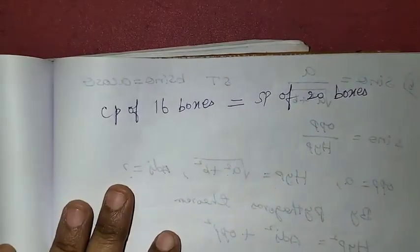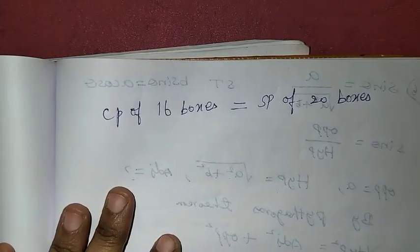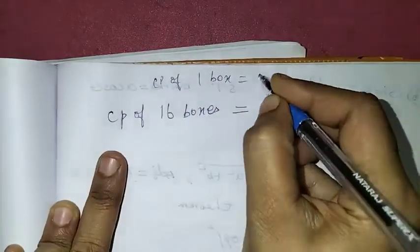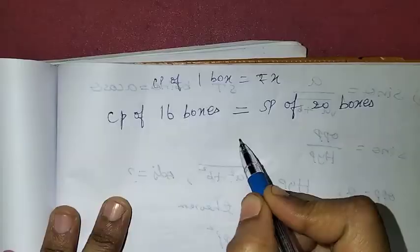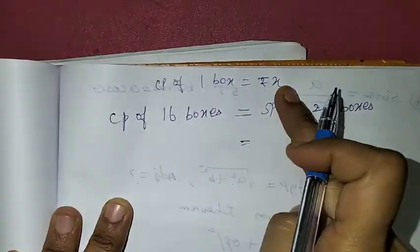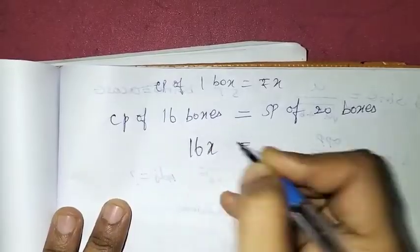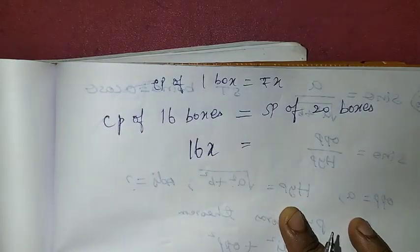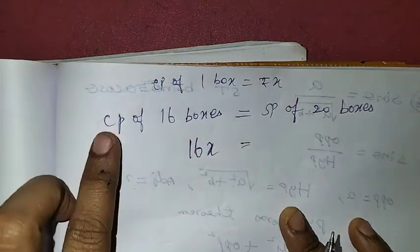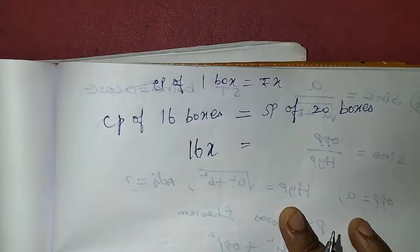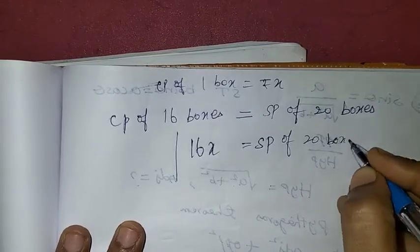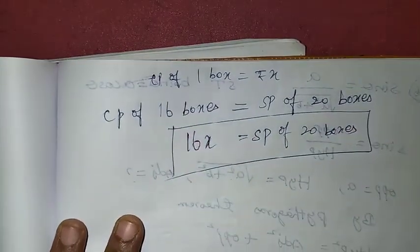We need to compare the cost price of 1 box with the selling price of 1 box. We will consider the cost price of 16 boxes equal to the selling price of 20 boxes, and let the cost price of 1 box be x.